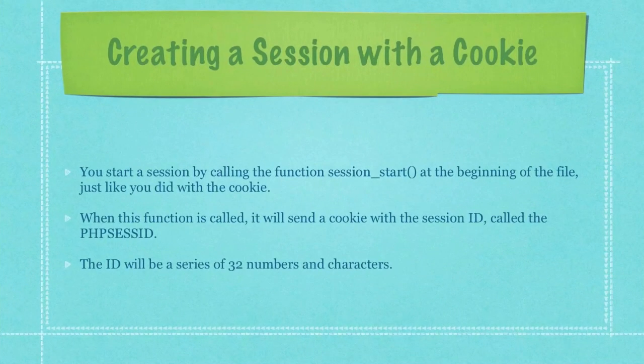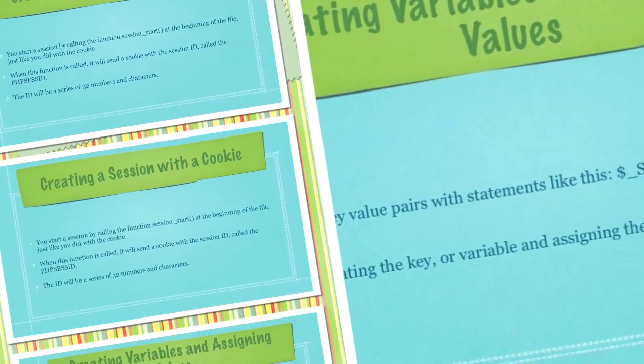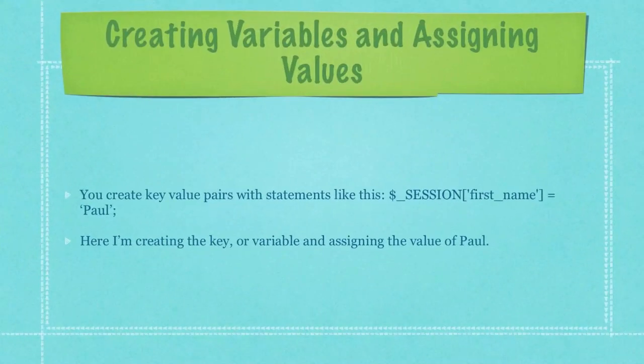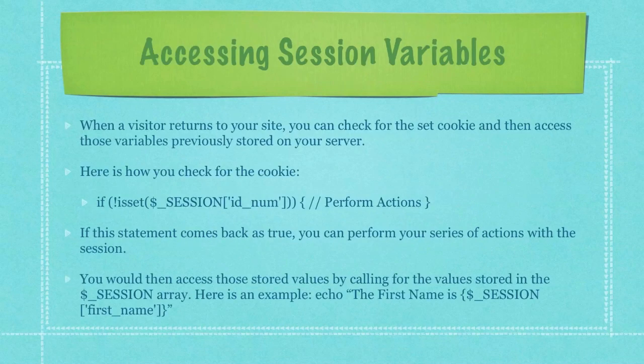You start a session by calling the function session_start() at the beginning of the file, just like you did with the cookie. When this function is called, it will send a cookie with the session ID called PHPSESSID. The ID will be a series of 32 numbers and characters. You create a key-value pair with statements like this — here I'm creating the key, or variable, and assigning the value of Paul. When a visitor returns to your site, you can check for the set cookie and then access those variables previously stored on your server.